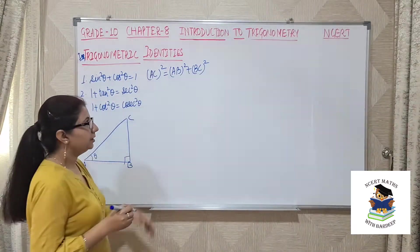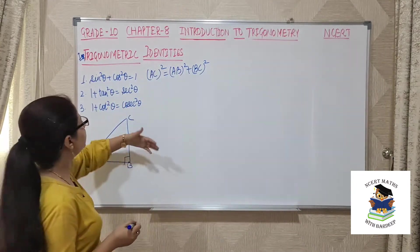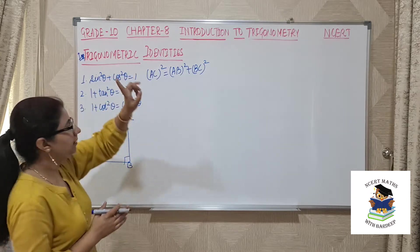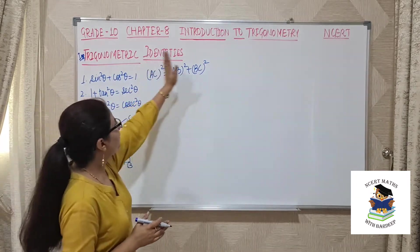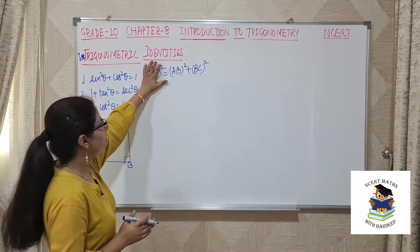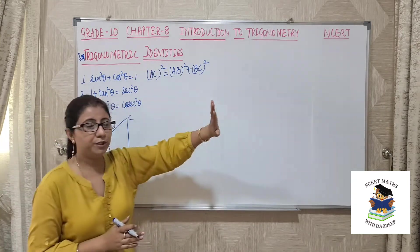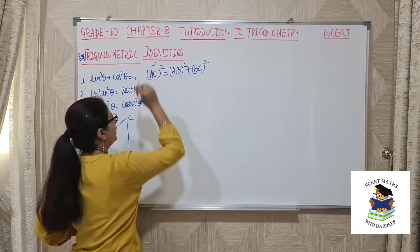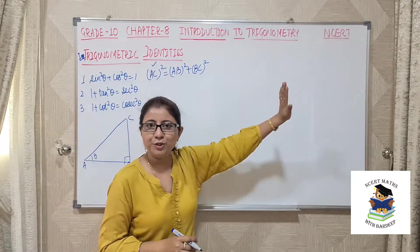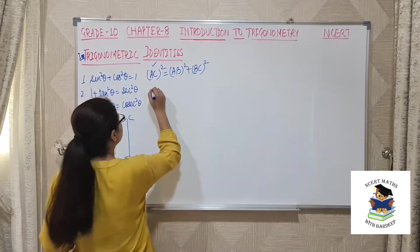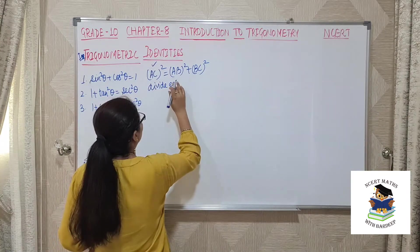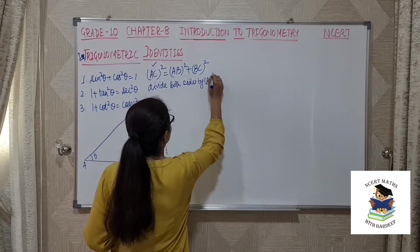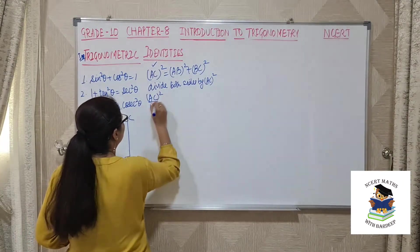Sometimes in your examination they will ask you to prove an identity. For the first identity, sin²θ + cos²θ = 1, the right-hand side has only one term — that is 1. Looking at the Pythagorean equation, we need to produce a 1. So we divide the full equation by AC². Dividing both sides by AC² gives: AC²/AC² = AB²/AC² + BC²/AC².